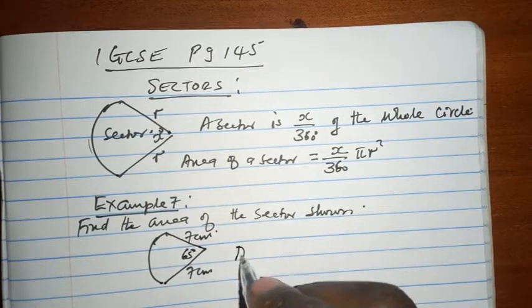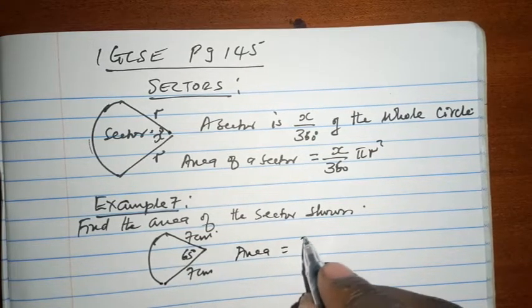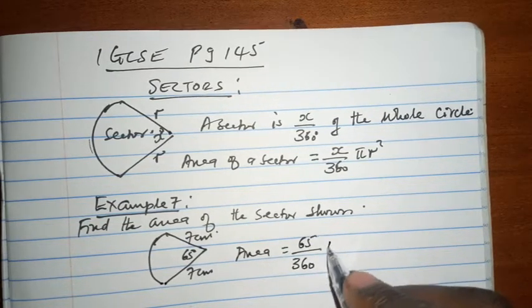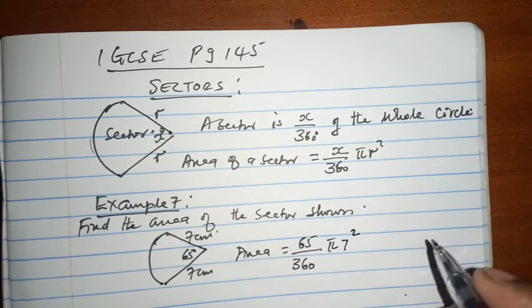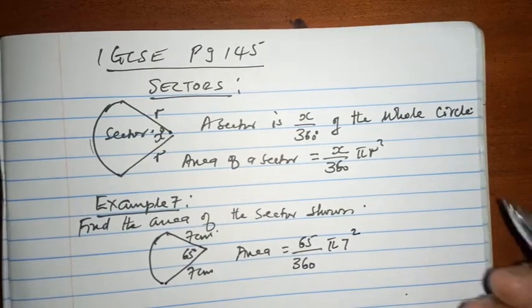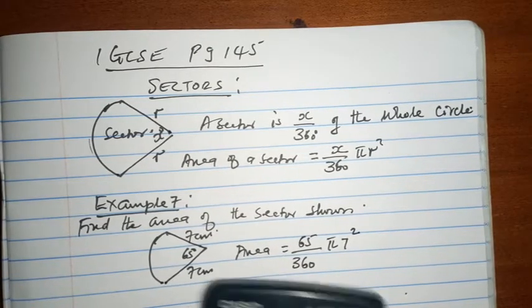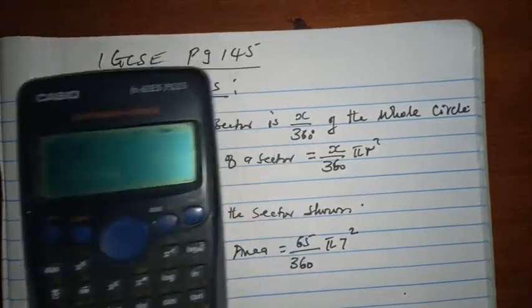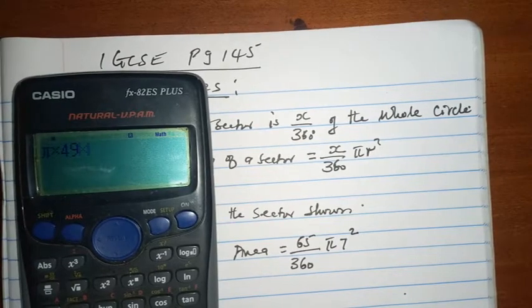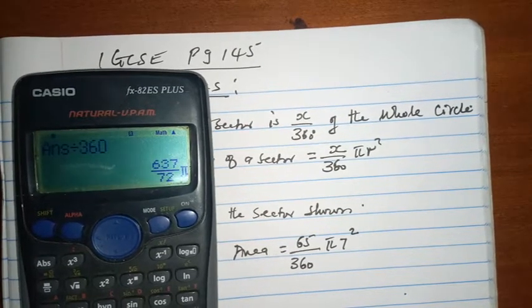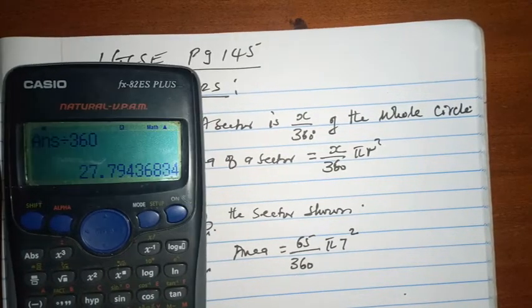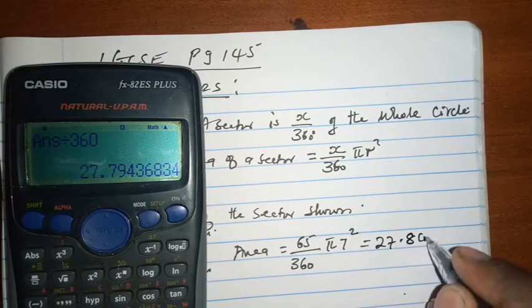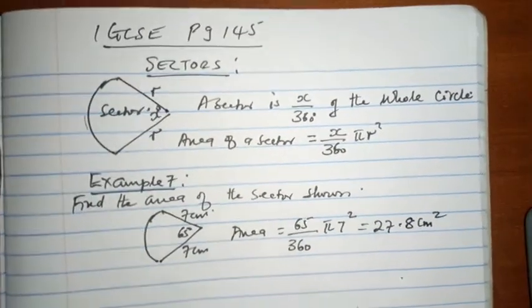The area is the angle at the center, which is 65 degrees, out of the total possible 360 degrees of pi 7 squared. Pi times 49, which is 7 squared, times 65, everything divided by 360. And we get 27.8, this is 27.8 cm squared. That is the area.